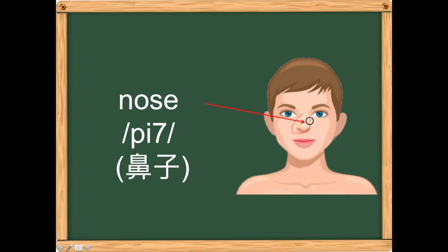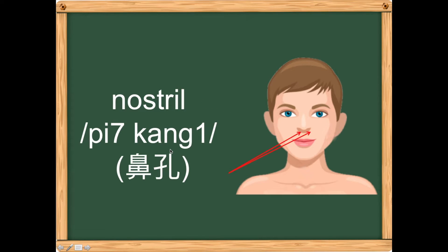Your nose is called 'pì.' The two nostrils below the nose are called 'pì khăn.'